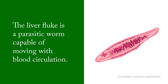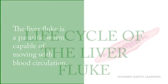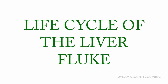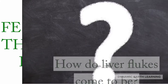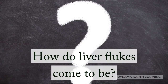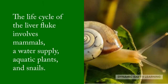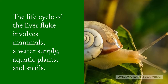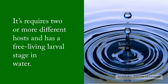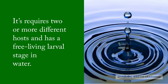Once they enter a human or another mammal, they can cause sickness and disease. The life cycle of the liver fluke involves mammals, a water supply, aquatic plants, and snails. It requires two or more different hosts and has a free-living larval stage in water.